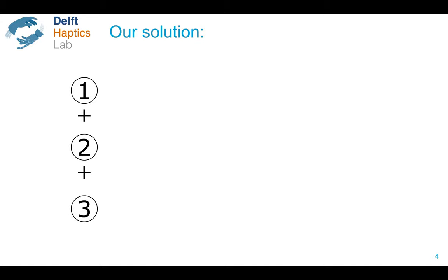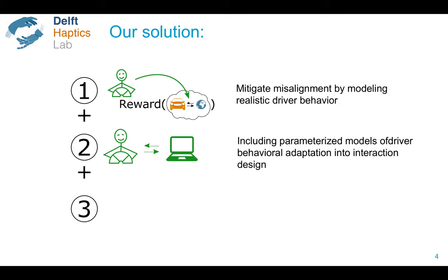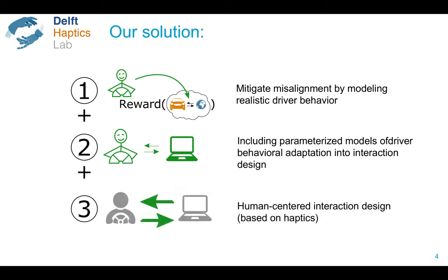What we try to do in our team at Delft is a three-pronged approach. First, we make the best possible algorithms to mitigate misalignment, based on models of realistic driver behavior — not just an average statistical pile of data, but models that capture individual driving behavior. Second, we include parameterized models of driver behavioral adaptation into the interaction design with the AV. And finally, we take a truly human-centered approach to interaction.